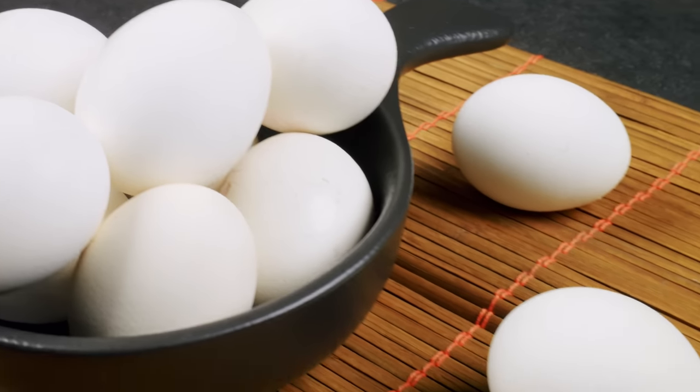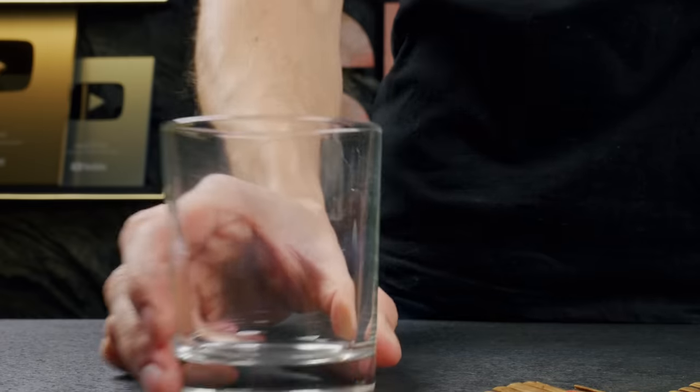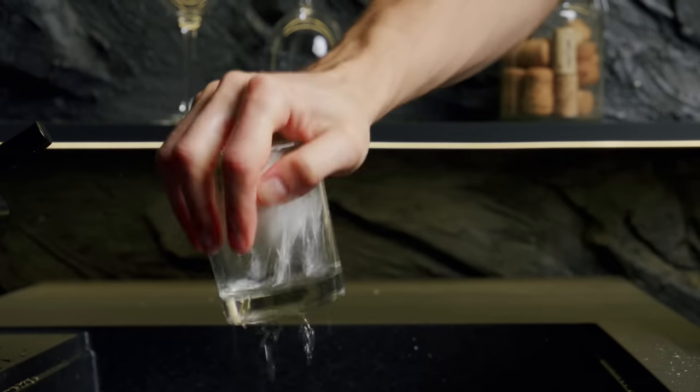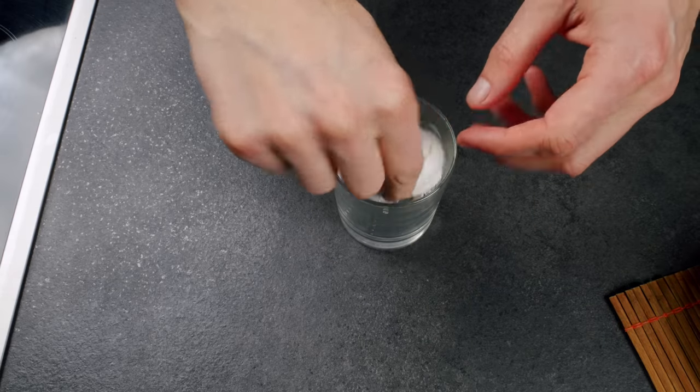If you need boiled eggs, I've got a super trick to make peeling them a cinch. Just put the boiled egg in a glass and add a little water. Give the glass a good shake and the shell will come off very easily.